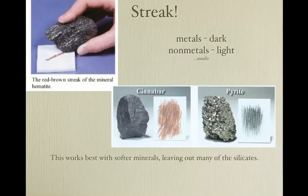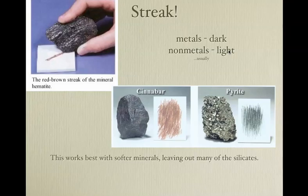Streak. What is streak? Streak is the color of a mineral's powder. You take an unglazed porcelain plate, rub the mineral across it, and it will leave a colored streak if it's softer than the plate. This is a problem because many silicates tend to be harder than the plate, so you can't do that. In general, things that are metals tend to have a dark streak; non-metals tend to have a light streak. Cinnabar does that, pyrite does that, hematite looks black but it leaves a reddish-brown streak.